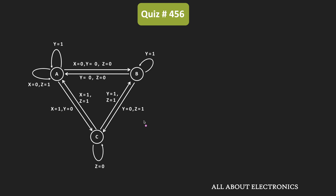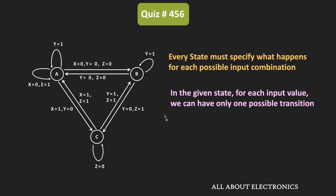Since we have three inputs, in each state we should have a total of eight outgoing transitions. Every state diagram should follow two rules. First, every state must specify what happens for each possible input combination — since we have three inputs, all eight possible outgoing transitions should be specified. Second, in a given state, for each input value, we can have only one possible transition.